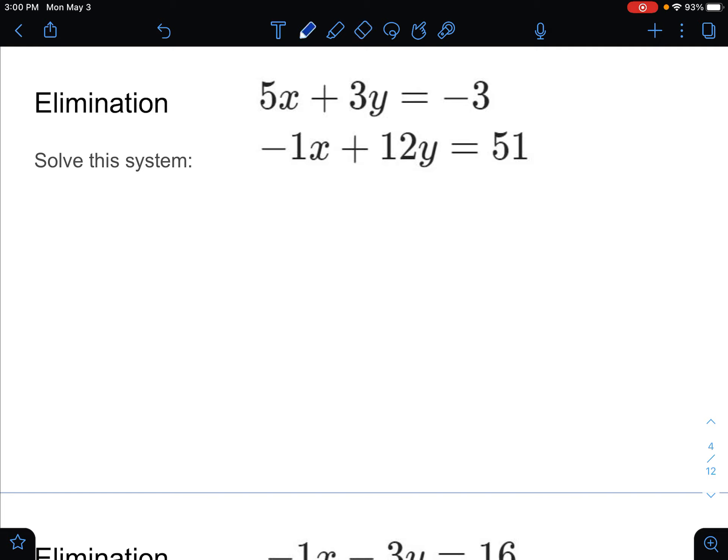I like how the 1 is already negative here, so I'm going to just stick with that versus multiplying by a negative. That often leads to errors when you multiply by negatives. So for the bottom, I'm going to do times 5 to the whole thing. That will give us negative 5x plus 60y, equaling 51 times 5 is 255.